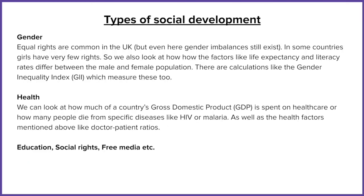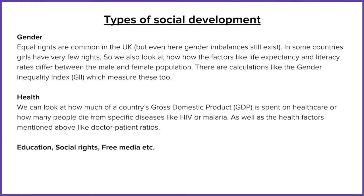Let's look at a few different types of social development — how are we developing socially? We can look at things like gender, health, and education. Does every person have the same rights as everybody else? In some groups, gender is not balanced — males have more rights than females. It could also be that one ethnic group or one religious group may not have as many rights as another. Does the media have the right to say what it wants, or is it controlled by the state? All of these things are types of social development.